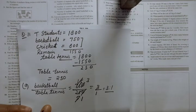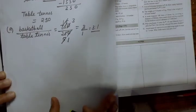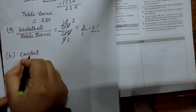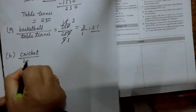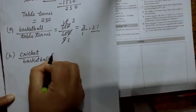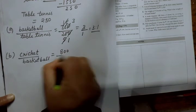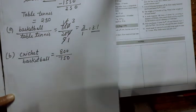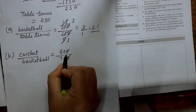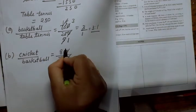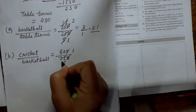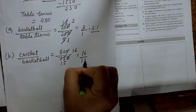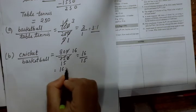This is the ratio of basketball to table tennis. After cancelling zeros — 75 upon 25 — then simplifying by 25, we get 3 upon 1. So basketball to table tennis ratio is 3:1. For part B, ratio of cricket to table tennis: 800 upon 250. Cancelling and simplifying gives 16 upon 15, so the ratio is 16:15.